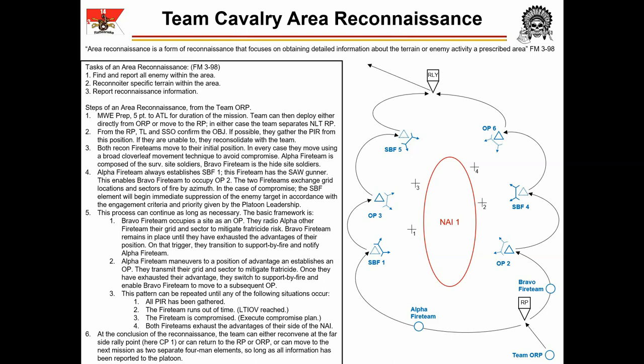As a final option, if the team leader is confident that all information has been reported via FM prior to the team reconsolidating at the Far Side Rally Point, he can direct his two separate fireteams to move to the next objective or checkpoint independently to minimize their signature as they travel away from the NAI. In any case, the team leader leads the team into the next mission, or the team moves to the extraction point. This concludes the mission.